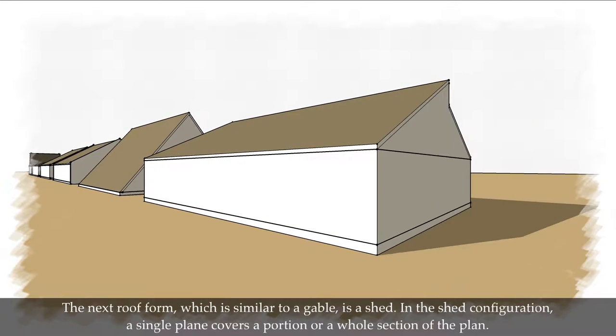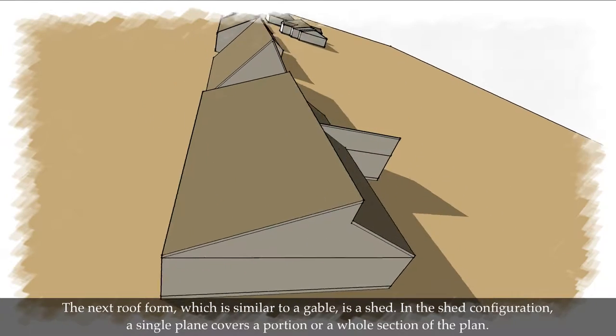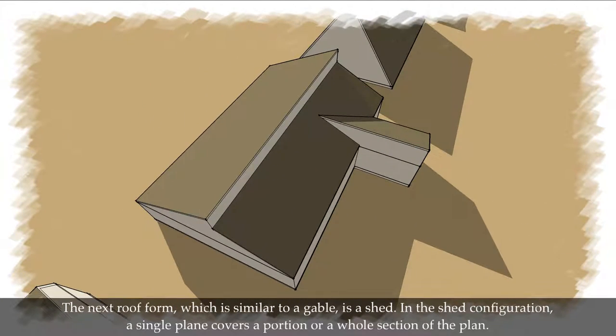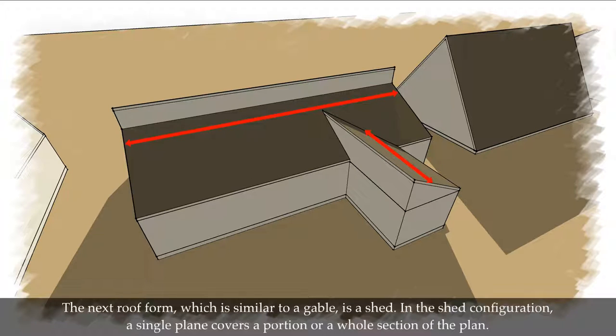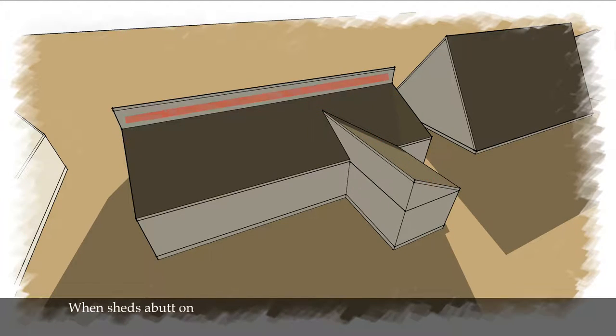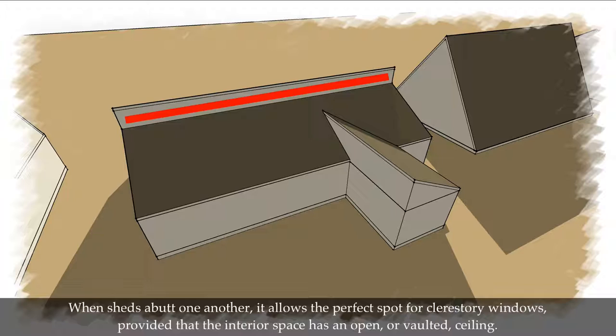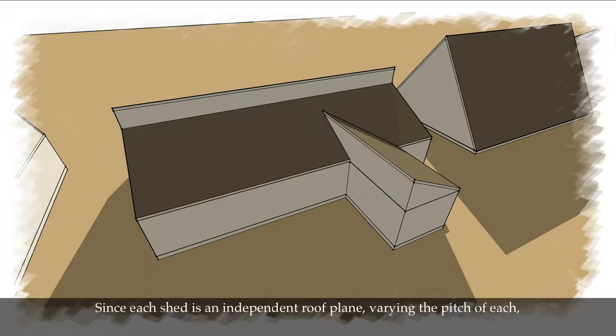The next roof form, which is similar to a gable, is a shed. In the shed configuration, a single plane covers a portion or a whole section of the plan. When sheds abut one another, it allows the perfect spot for clear story windows, provided that the interior space is an open or vaulted ceiling. Since each shed is an independent roof plane, varying the pitch of each, if desired, is simpler than in other roof forms.